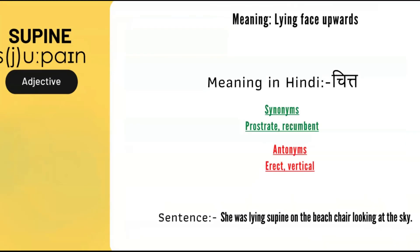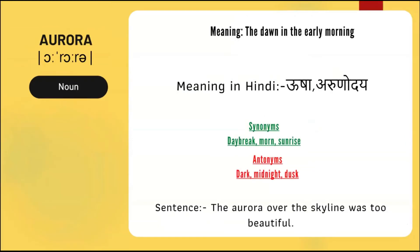The next word is 'aurora'. Its part of speech is a noun, and its meaning is the dawn in the early morning — also known as 'usha' in Hindi.